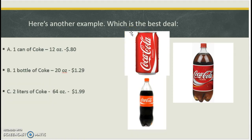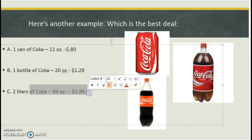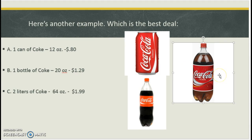Here's another example. Which one is the best deal? A can of Coke for $0.80. A bottle of Coke, nice 20-ouncer for $1.29. Or these 2 liters that they sell for $2.00. Really? So you can see here that this is about 3 times the amount for only $0.70 more. This is easily the best deal.